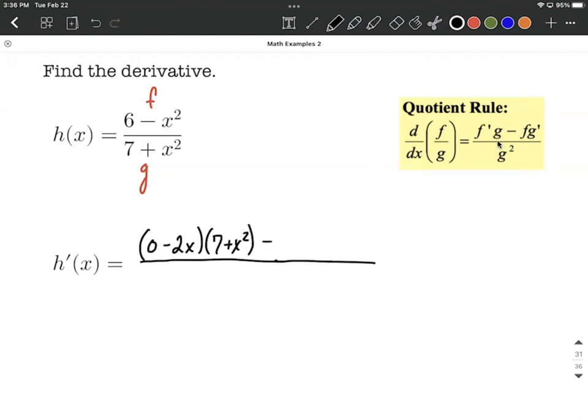And from there, we want to subtract, and we're going to copy down f. So 6 minus x squared.